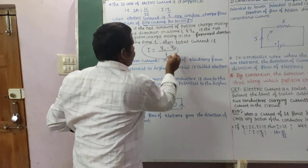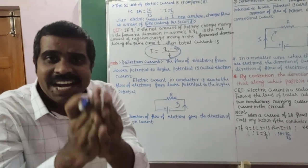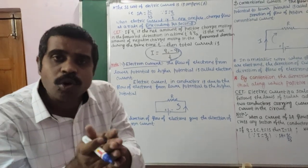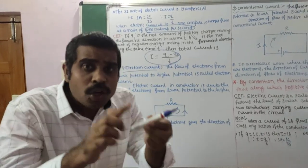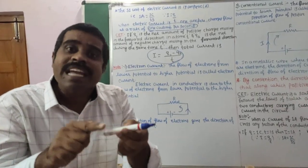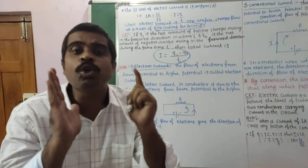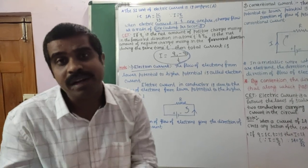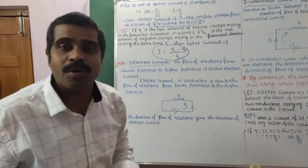This is the most important point. I is equal to Q1 minus Q2 divided by t, where Q1 is the net amount of positive charge flowing through the conductor in the forward direction in time t, and Q2 is the net amount of negative charge flowing through the conductor in the forward direction in the same time t. This is the total charge formula — very important to remember.